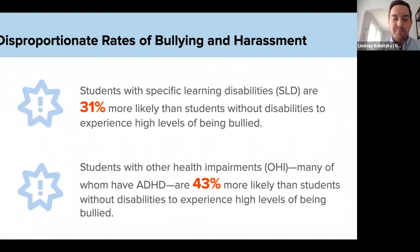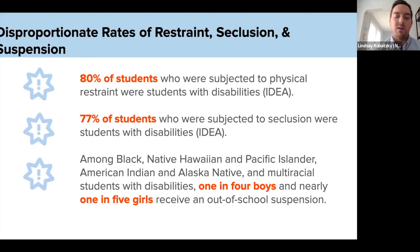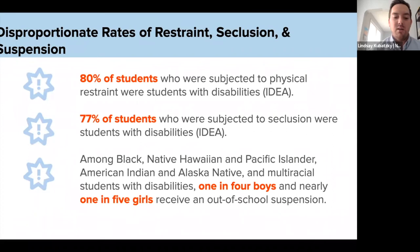Students with disabilities have disproportionate rates of harsher discipline. 80% of students subjected to physical restraint and 77% subjected to seclusion are students with disabilities. In terms of suspension, one in four boys with disabilities who are of color are suspended, and one in five girls of color receive an out-of-school suspension. It's really important that when we talk about equity and school monitoring, we recognize our students are more likely to be bullied and harassed, but also more likely to be disciplined, secluded, and restrained in harsh ways — especially if they are also students of color.